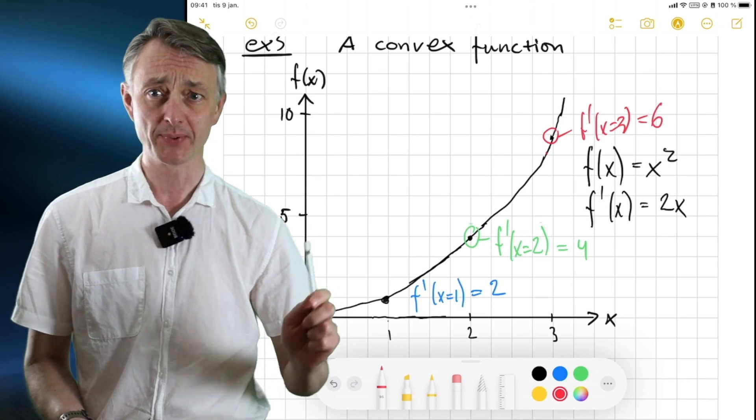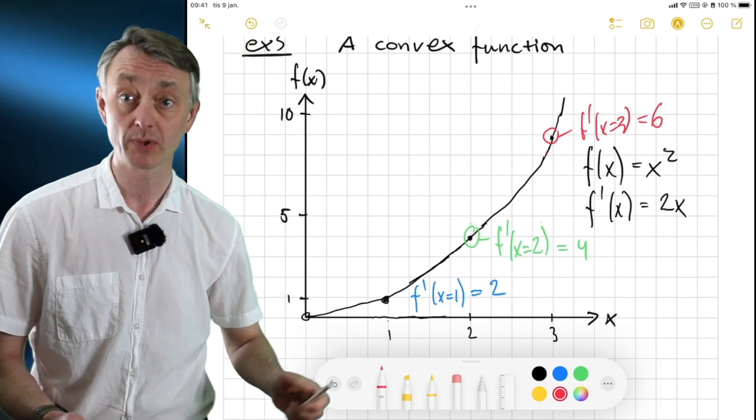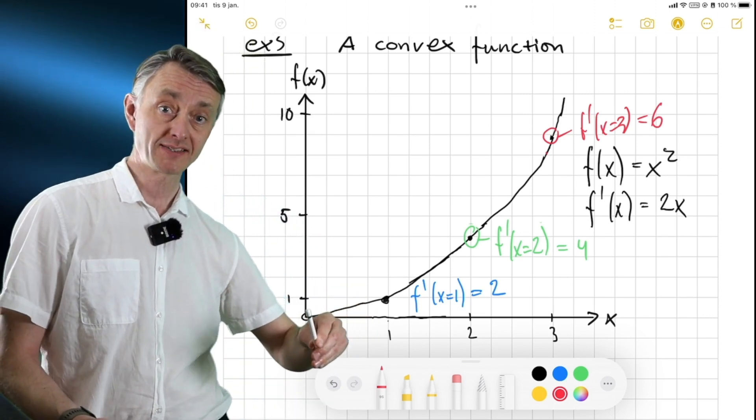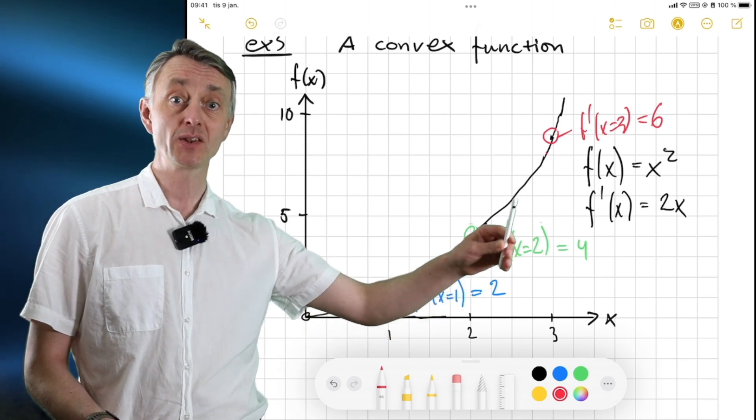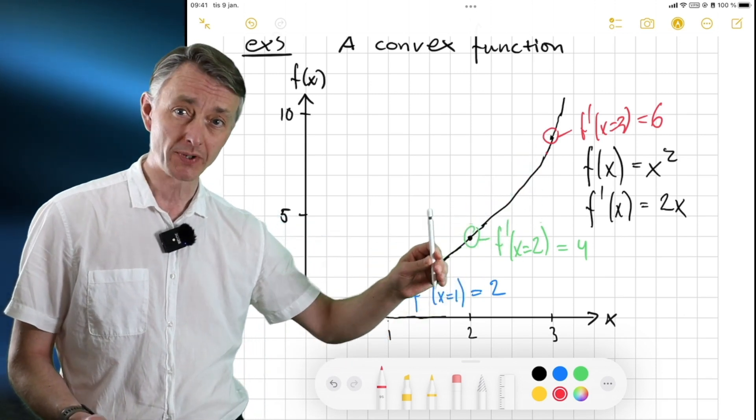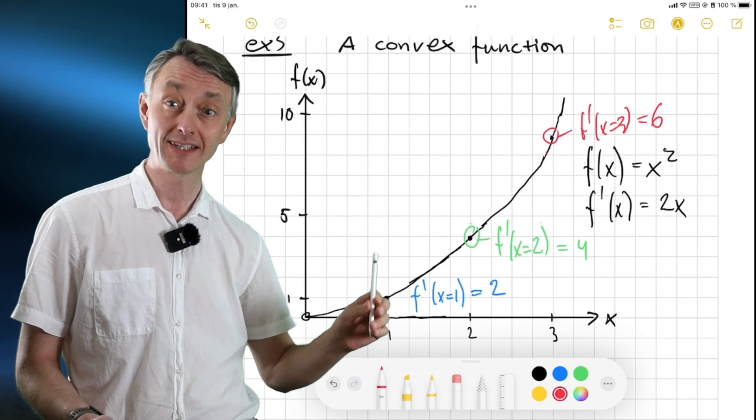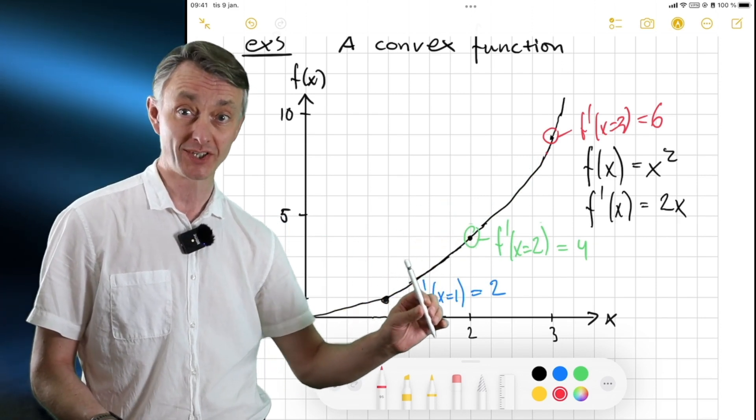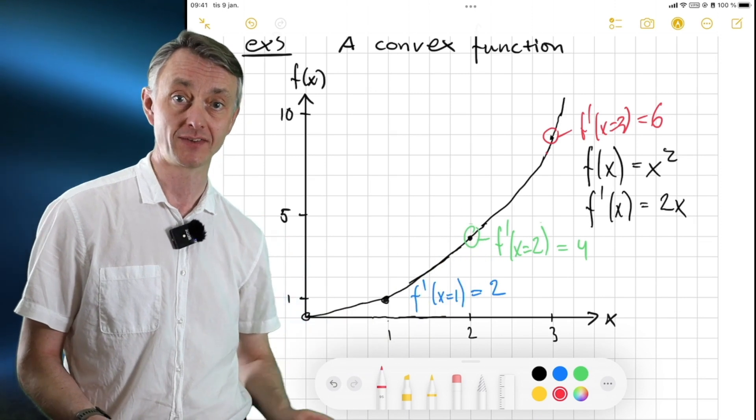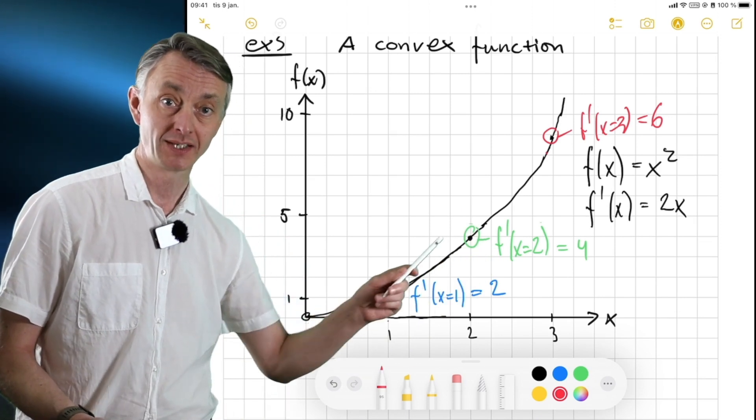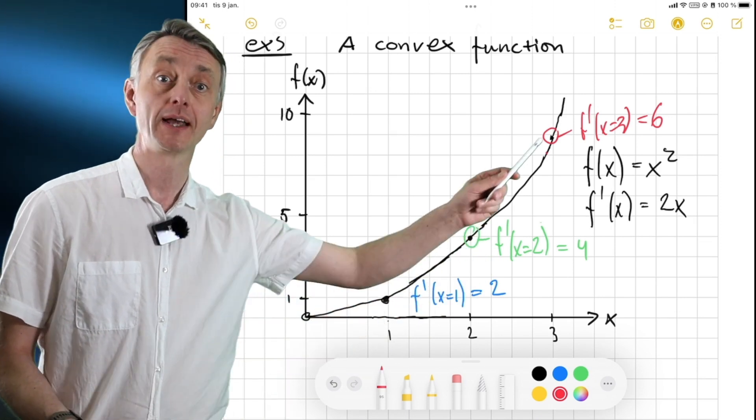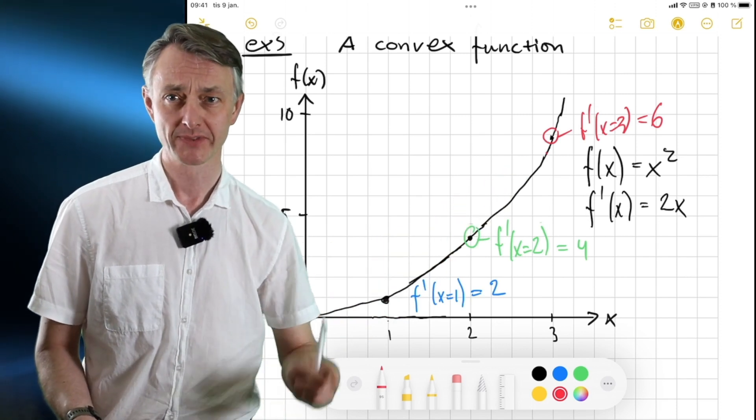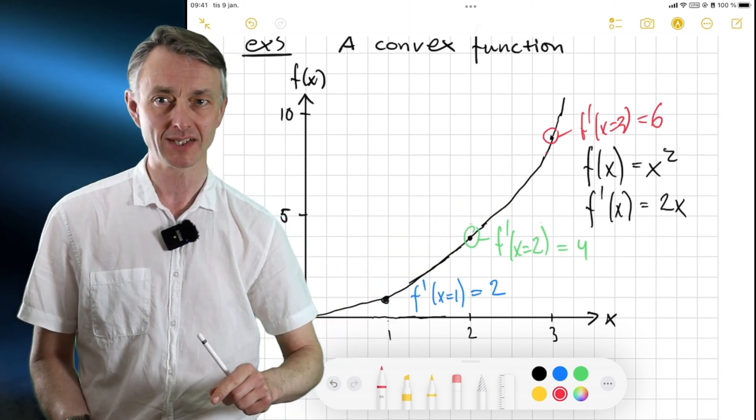This is very important to note that when we have a function like this, we can see it's not a straight line. Then, we know that the slope of this function will differ between different points. So, it does matter at which point we evaluate the derivative. Here it's plus 2, here it's plus 4, and over here it's plus 6. Remember that and I'll see you next time. Bye bye!